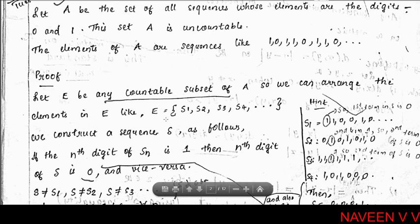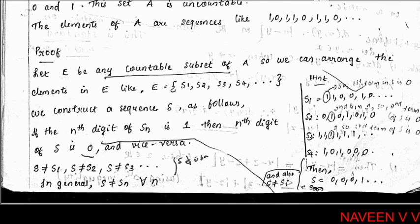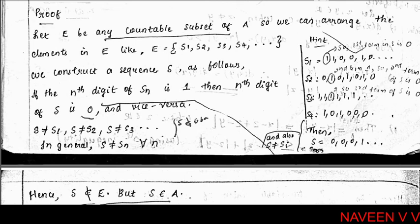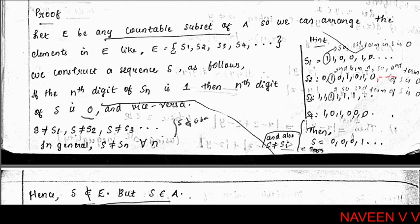Suppose the sequences are listed as S₁, S₂, S₃, S₄, and so on. For example: the first sequence S₁ could be 0, 0, 0, 0, ...; the second sequence S₂ could be 1, 0, ...; the third sequence S₃ is 1, 1, 1, 1, ...; the fourth sequence S₄ is 1, 0, 1, 0, ...